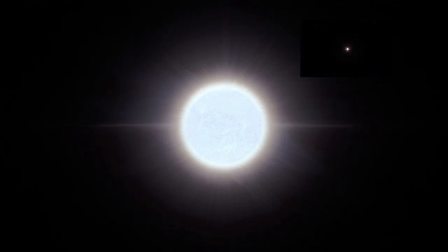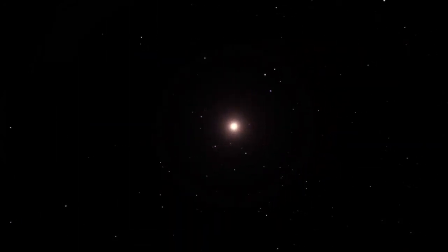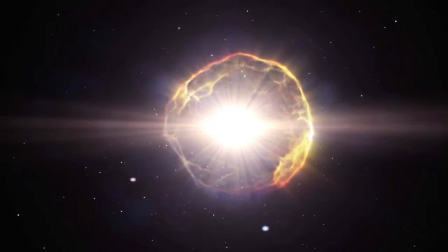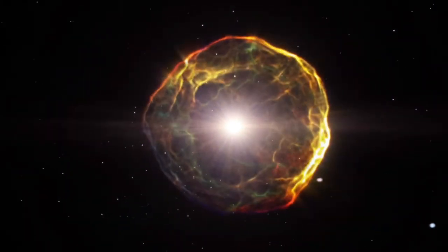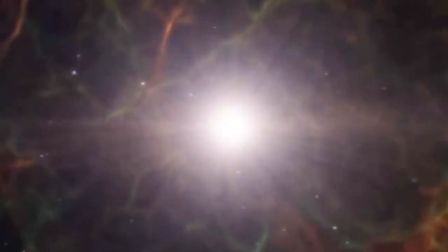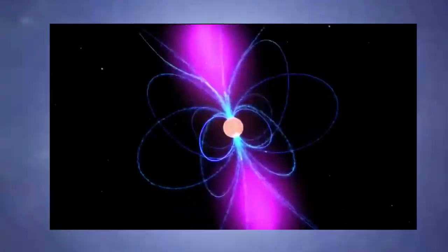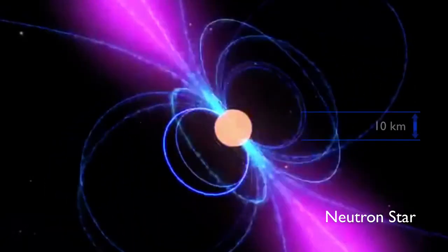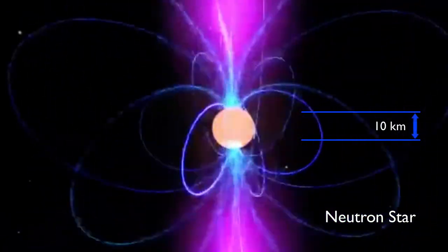How about when a supergiant collapses in a supernova to become a neutron star? Now, please recognize that a white dwarf is about the size of Earth. A neutron star, which comes from a star much more massive than our Sun, is only about 10 kilometers in diameter. Yikes!